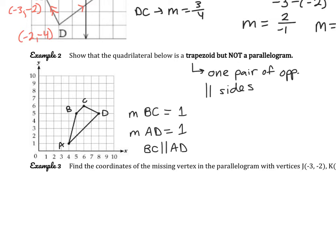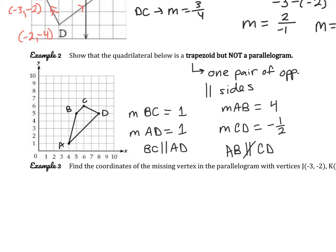Now we have to show that AB is not parallel to DC. The slope of AB is 4 over 1, so my slope is 4. And the slope of CD, starting on the left, is down 1 over 2, so negative 1 over 2. Since the slopes are different, AB is not parallel to CD. This proves that it is a trapezoid but not a parallelogram.